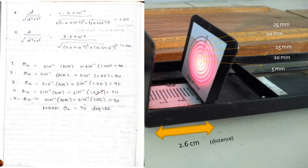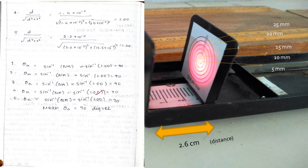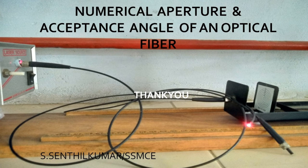Substitute the numerical aperture value into the acceptance angle formula. For example, theta equals sine inverse of numerical aperture; if the numerical aperture value is 1, the answer is 90 degrees. Similarly, calculate five values and take the mean value as the final acceptance angle.